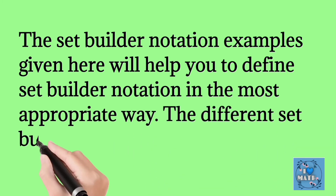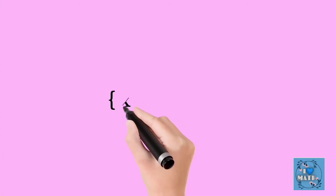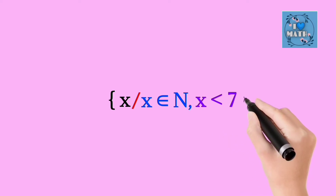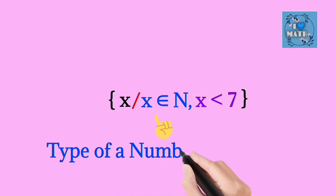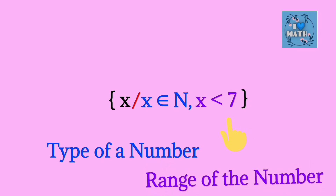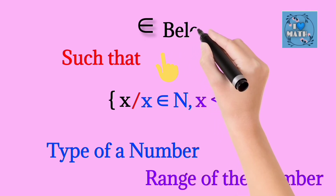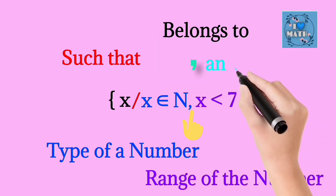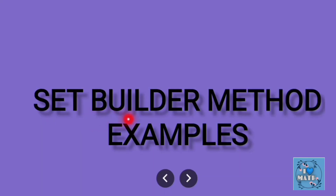The different set builder notation examples are as follows. Example: { x | x ∈ N, x < 7 }. Here x ∈ N means the type of number (natural numbers), and x < 7 defines the range of the number. The symbol | represents 'such that,' ∈ means 'member of set,' and the comma means 'and.' In this video we convert different set builder forms into tabular forms so that you can understand this topic easily.